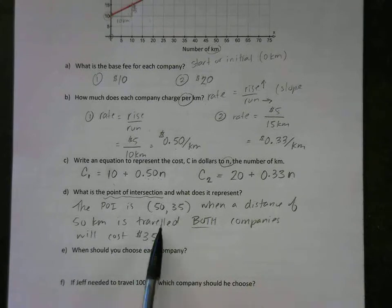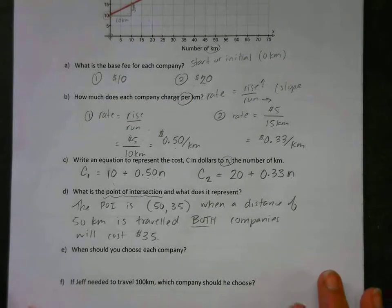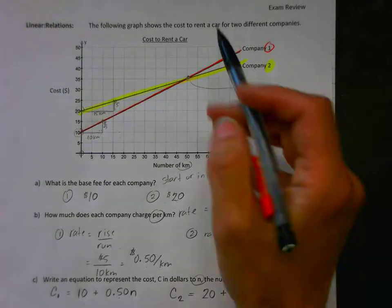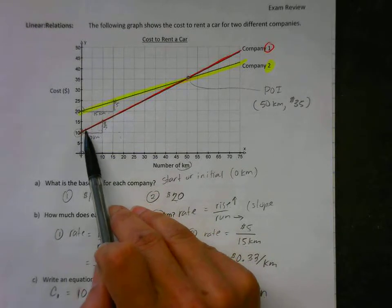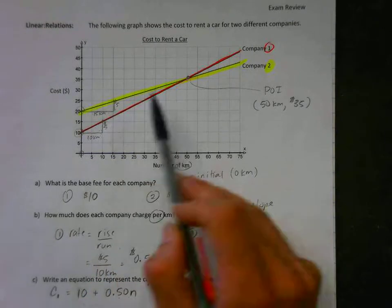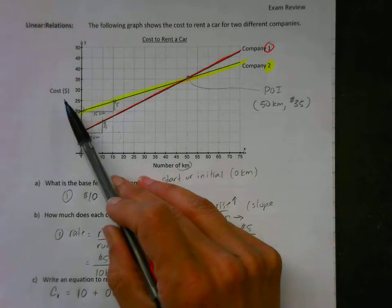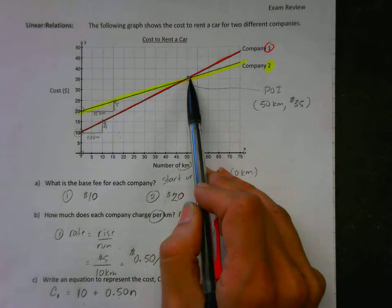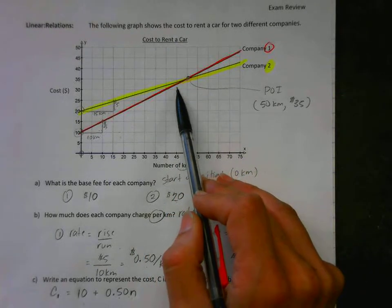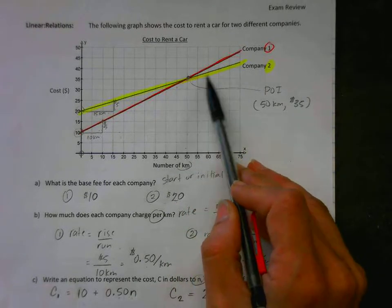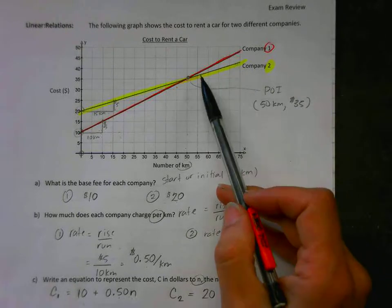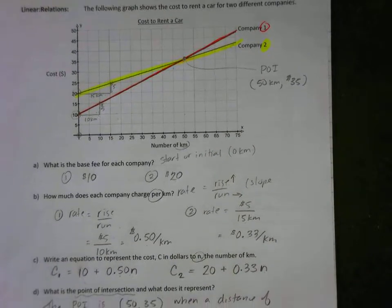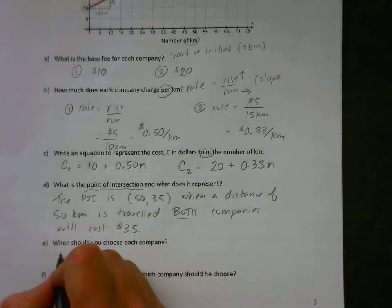Now this point is important when you have to decide which company is a better price. So question E says: when should you choose each company? So what you want to do is you want to take a look at your graph, and the point of intersection is where something changes. Before that point of intersection, you can see the yellow line is consistently above the red line, which means that company one is cheaper from zero to fifty kilometers, because that line is below. The cost is on the vertical axis, so this number is consistently lower than that one. So before fifty kilometers, I should go with company one. But what happens at the point of intersection is the red line now is above this one, which means the red one is more expensive now. So we should go with company two after fifty kilometers, or if we know our trip is going to be longer than fifty kilometers.